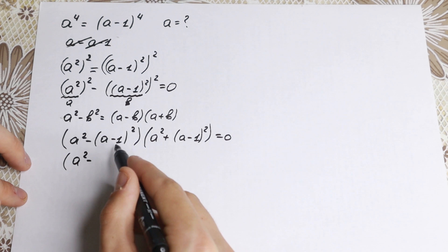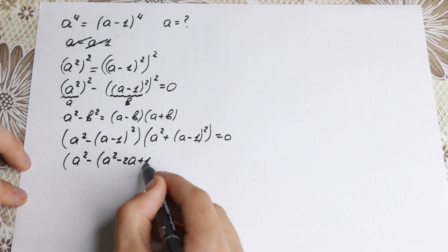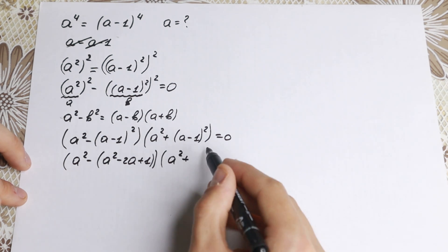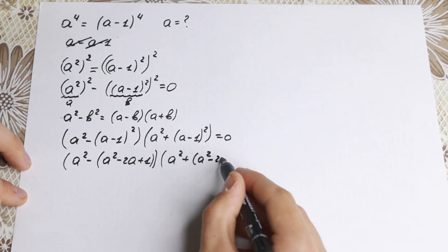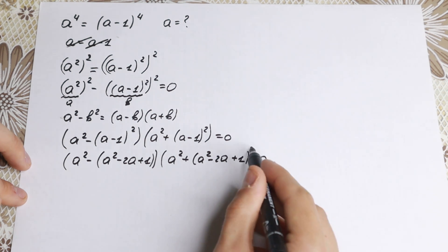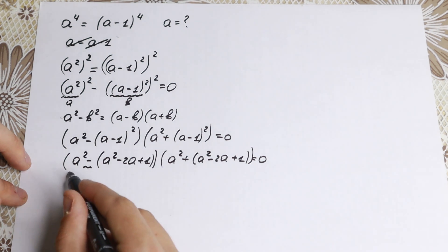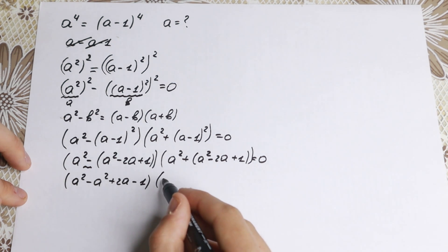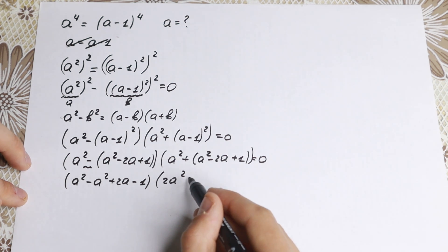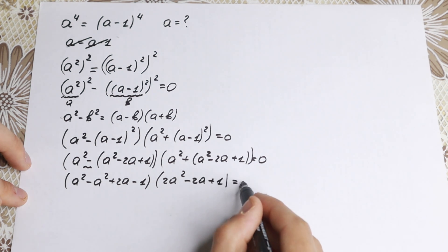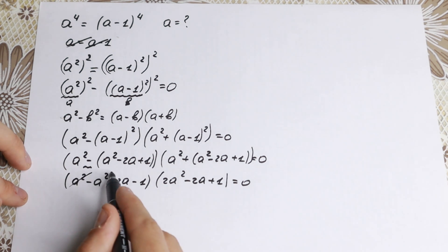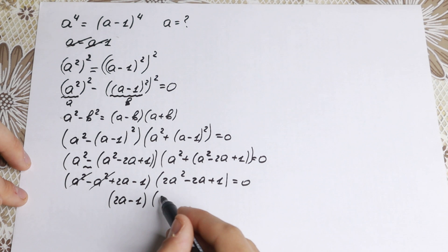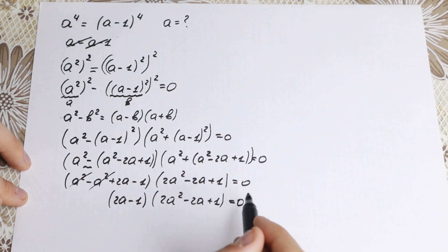Let's simplify each factor. For the first: a² minus (a−1)², expanding (a−1)² = a²−2a+1, so we get a² − (a²−2a+1) = 2a − 1. For the second: a² plus (a−1)², we add: a² + a²−2a+1 = 2a²−2a+1. So our factored equation is (2a − 1)(2a² − 2a + 1) = 0.